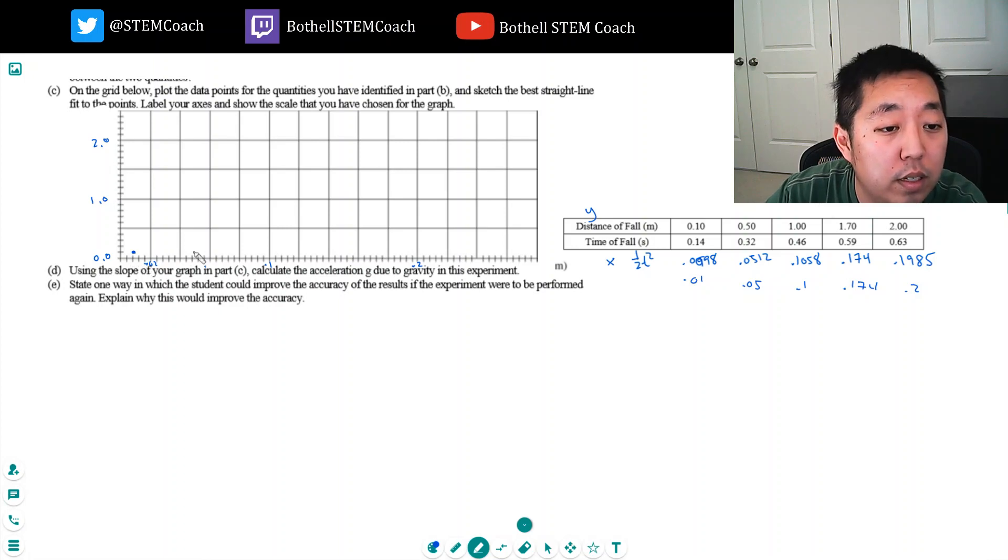0.05 would be about halfway here and then 0.50 would be about there. Then 0.1 and 0.1, then 0.174 - that's 1.6, 1.7, way around here. And then 0.2 a little before 0.2 and 2.